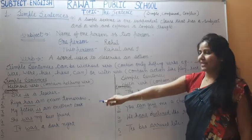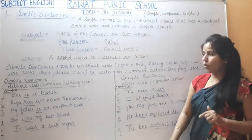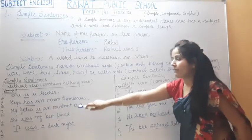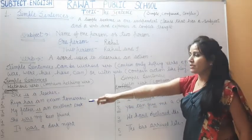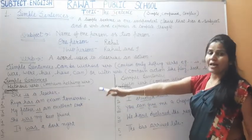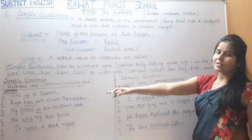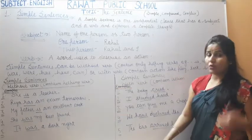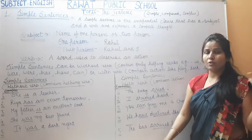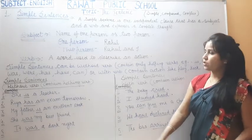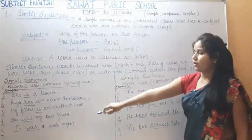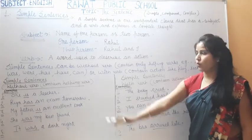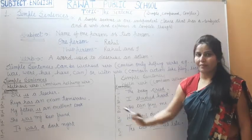Fourth example: 'She was my best friend.' Here also we are not using any main verb. Only 'was' is written — was is a helping verb that indicates past quality. Fifth: 'It was a dark night' — here also we are telling the quality of the past. So 'was' is a helping verb.